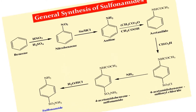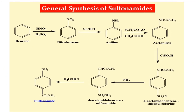If you look at the general scheme of sulfonamide synthesis, you will see that it is composed of multiple steps, starting with a benzene ring. Nitration of this benzene ring will give you nitrobenzene, then a chemical reduction of this nitro group will give you aniline. Acetylation of the amine group in the aniline will give you the starting material, which is acetanilide.